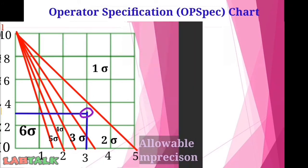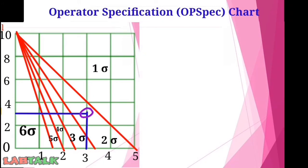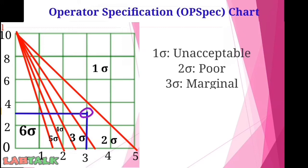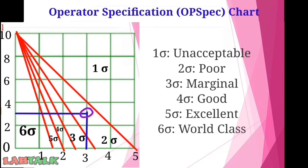How we classify this performance: if the intersecting point falls in the 1-sigma zone, it is unacceptable. In 2-sigma it is poor performance. In 3-sigma it is marginal performance. In 4-sigma the performance is good. In 5-sigma it is excellent. In 6-sigma it is world class performance. Here, our performance falls between the first and second line — the 2-sigma category — so the performance is marked as poor.